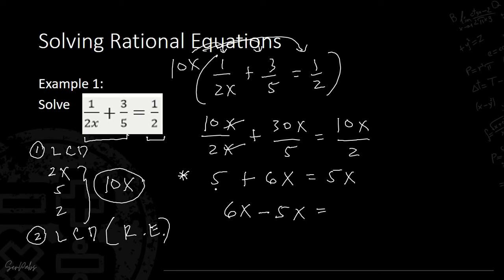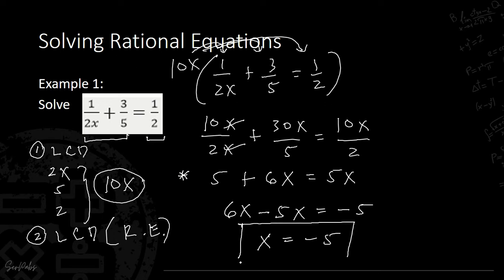Transposing 5x gives us 5 on the left, then we transpose 5 to the right side where it becomes negative 5. Combining 6x minus 5x gives 1x, or simply x. Therefore the answer for Example 1 is x equals negative 5.